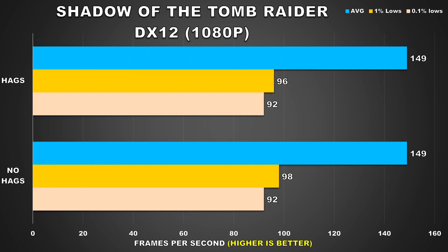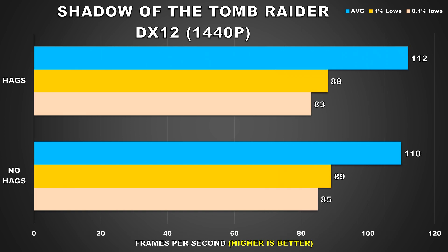The next game is Shadow of the Tomb Raider, and at both 1080p and 1440p we see similar performance figures between No HAGS and With HAGS. This was definitely one of the more demanding games in recent years, so a performance uplift here would have been nice — but as the results show, there's really nothing to it.